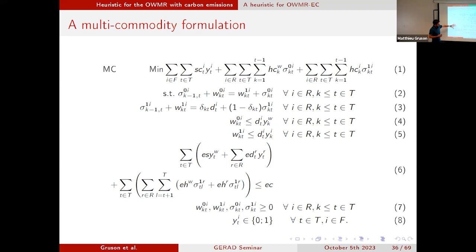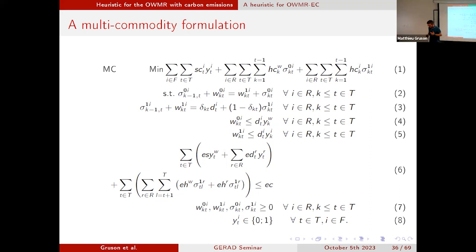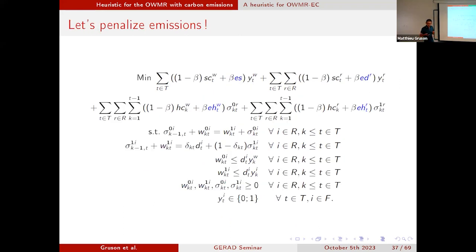Our main constraint is the global carbon emission constraint: we sum all the emissions from all the different decisions, and it cannot go beyond a certain threshold. The idea of the heuristic is to say this constraint is a hard, complicating one — so let's put it in the objective function and penalize it. We penalize the emissions with a certain factor beta.